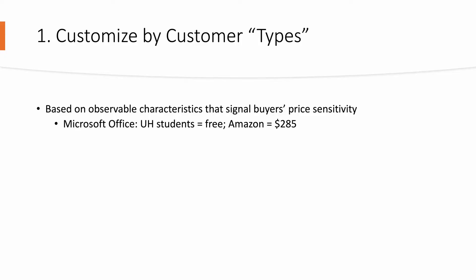First, customize by customer types. This is often based on observable characteristics of the buyer, and we would know which kind of buyers are more price sensitive. For example, as a UH student, you get Microsoft Office for free, and if you want to purchase it from Amazon, it actually costs $285. Because Microsoft can easily identify who are college students and who are not, they can separate these two types of customers and offer them different prices.